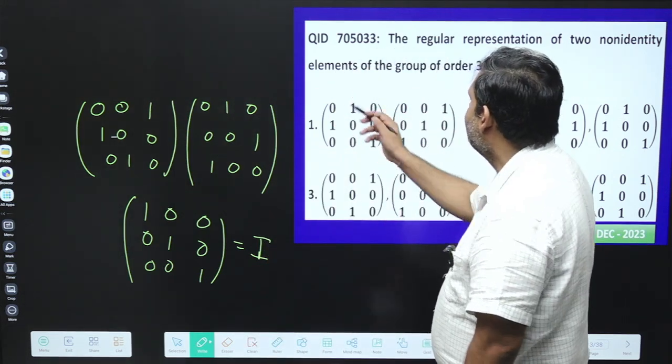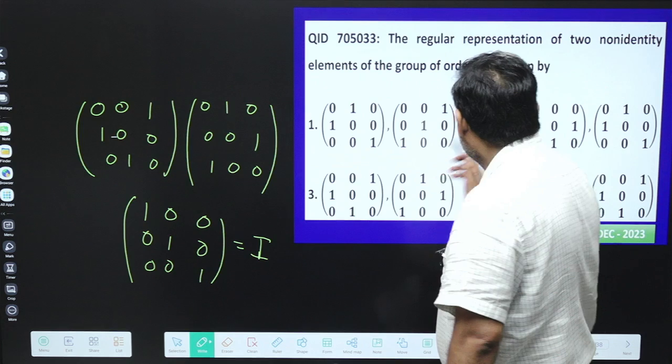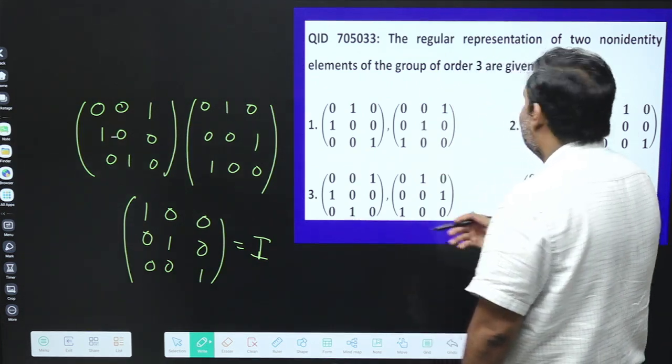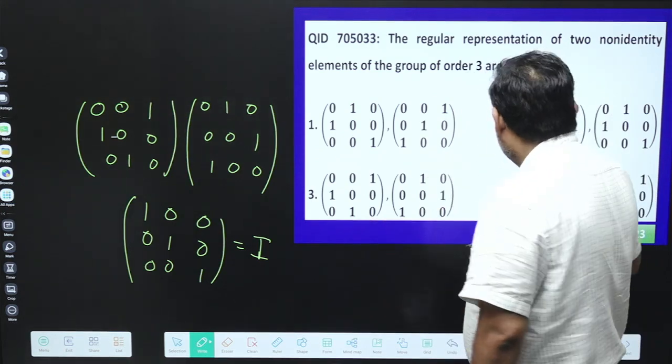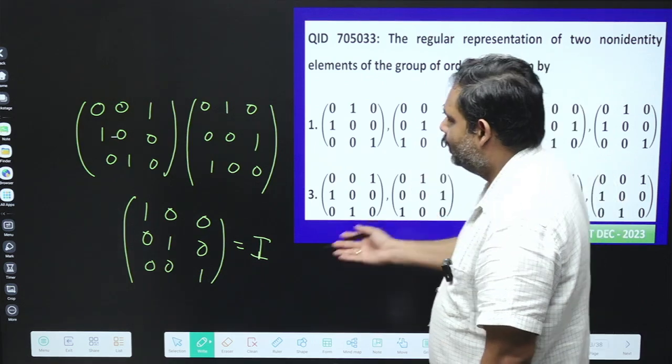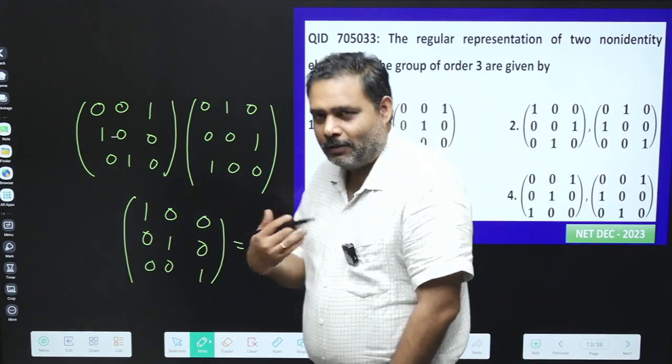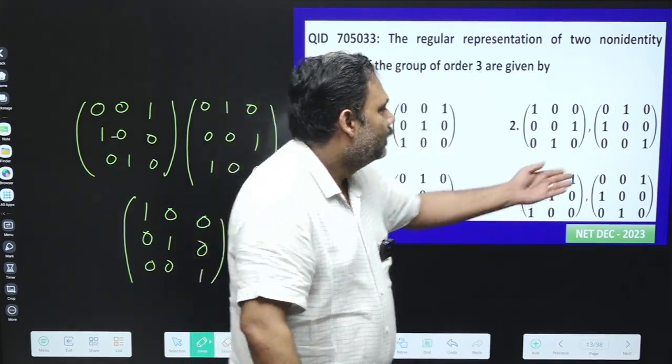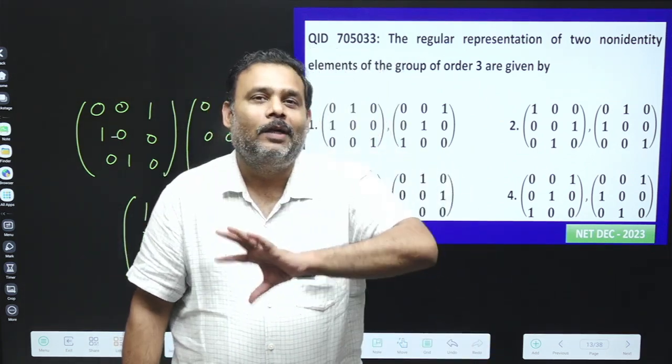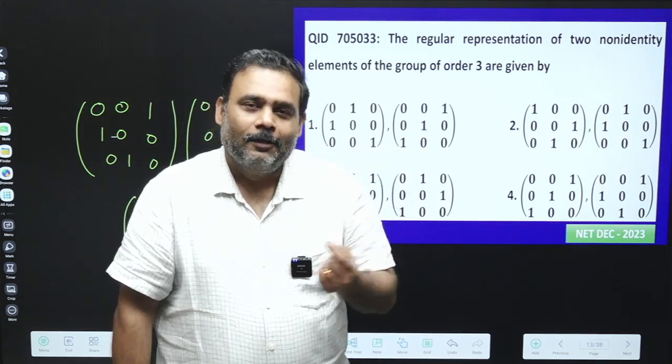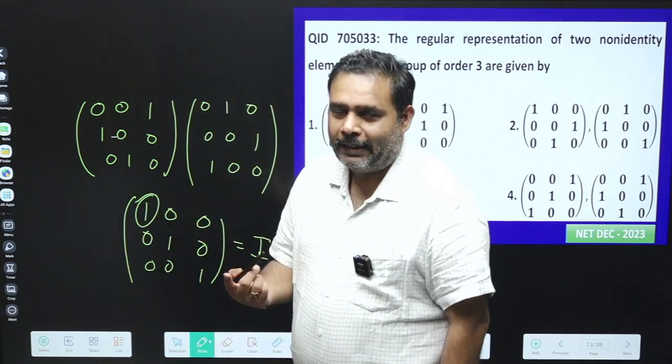So you can just do the quick calculation for each and every option. For example, the first element is 0 in the first option, so obviously it is not going to be identity. For the second option, again you can see the first element itself is 0, so again this is not identity. And yes, we have just calculated this one. And the fourth element you can just check, the first multiplication, you can check that first element is not 1. So there is no need to multiply all 3 by 3.